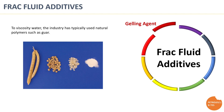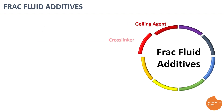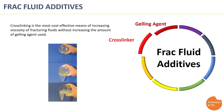The first additive is the gelling agent — the ingredient responsible for increasing the viscosity of the water. In most cases, a natural polymer is used, made by processing the seed of a plant called guar and turning it into a fine powder polymer. Crosslinking is the most effective means of increasing the viscosity of fracturing fluid without increasing the amount of gelling agent used, as the crosslinker material links between gelling agent polymer chains and increases viscosity by several folds.